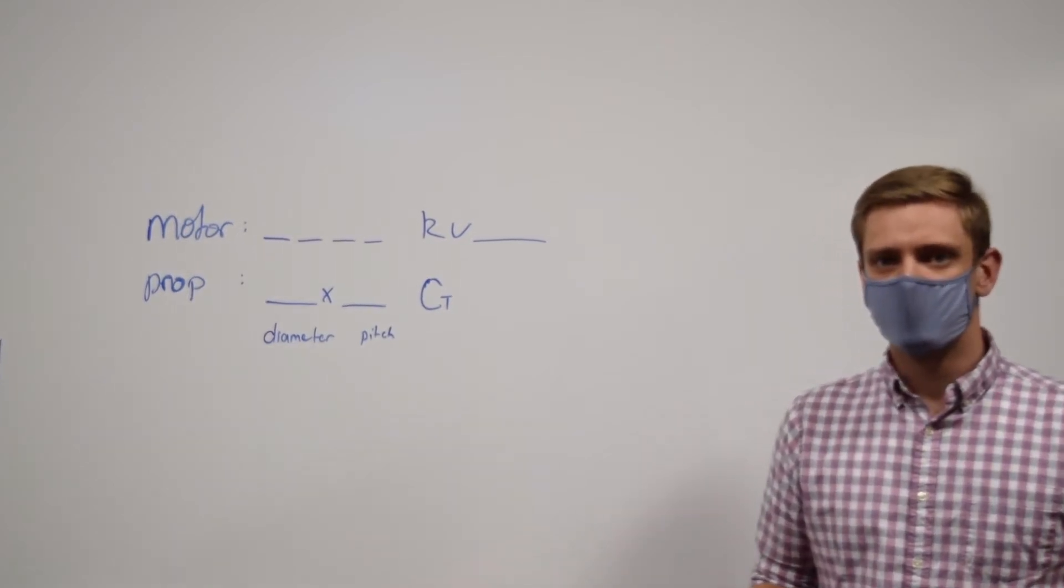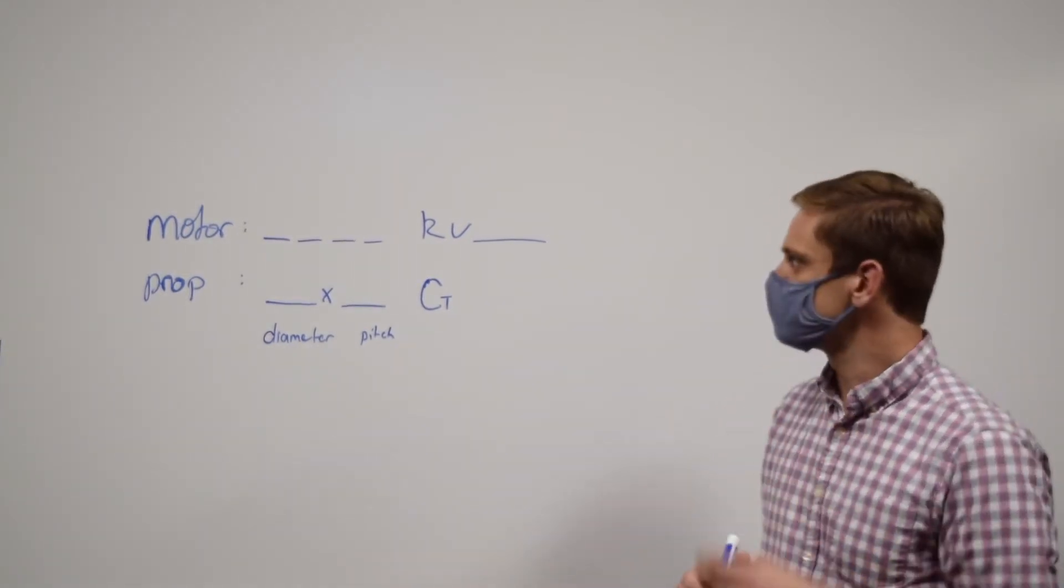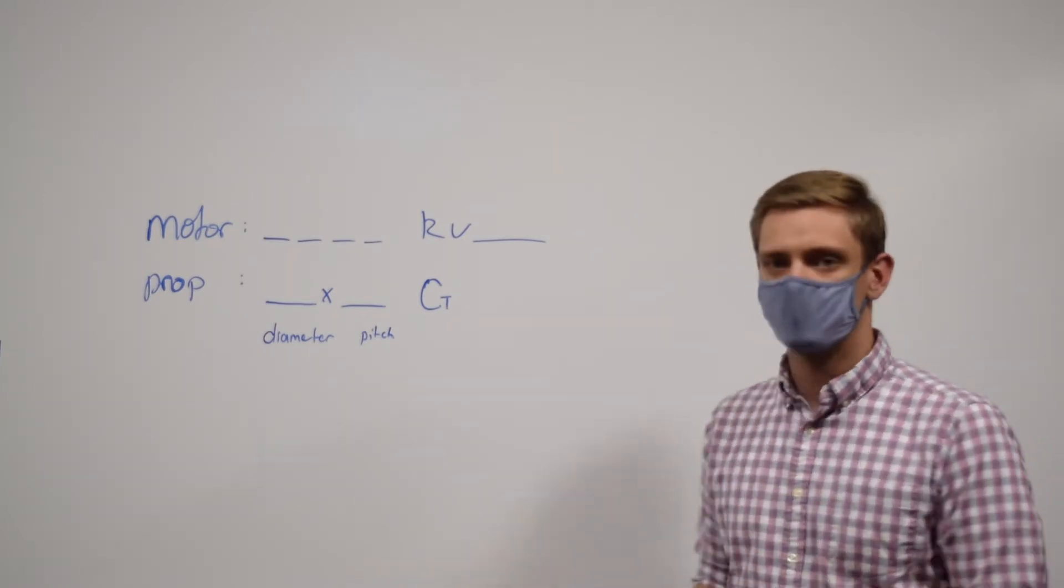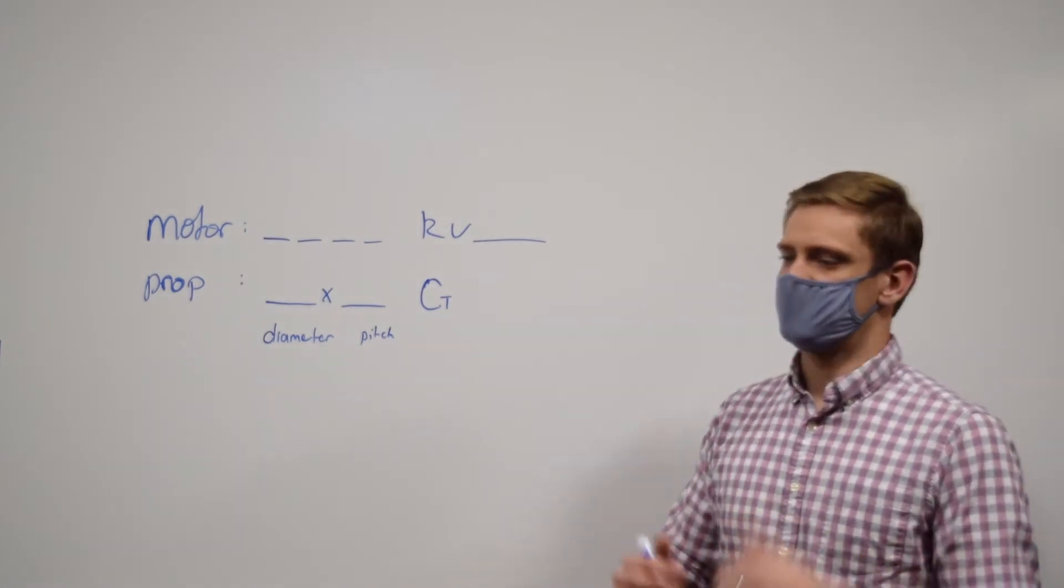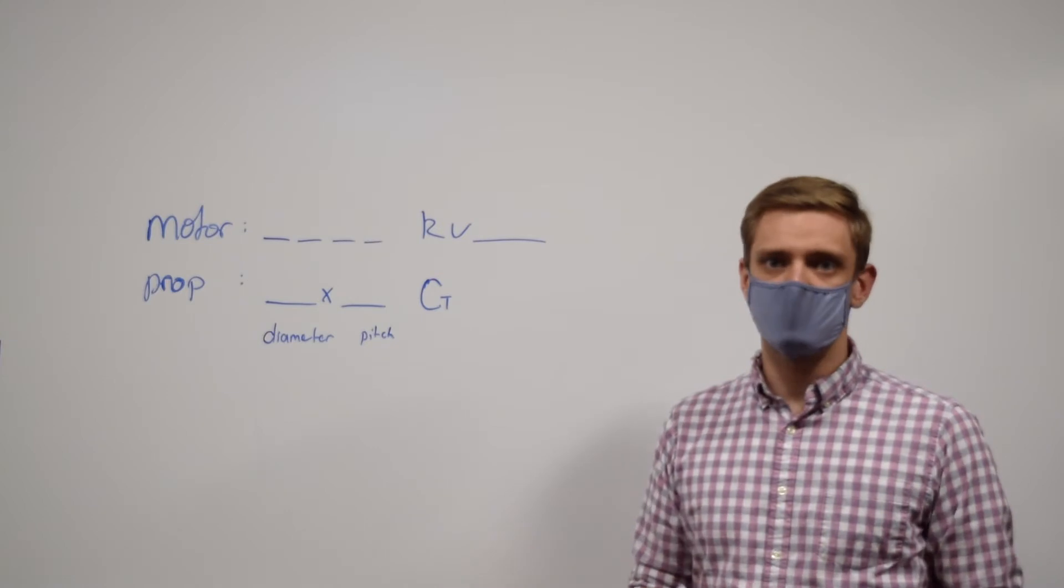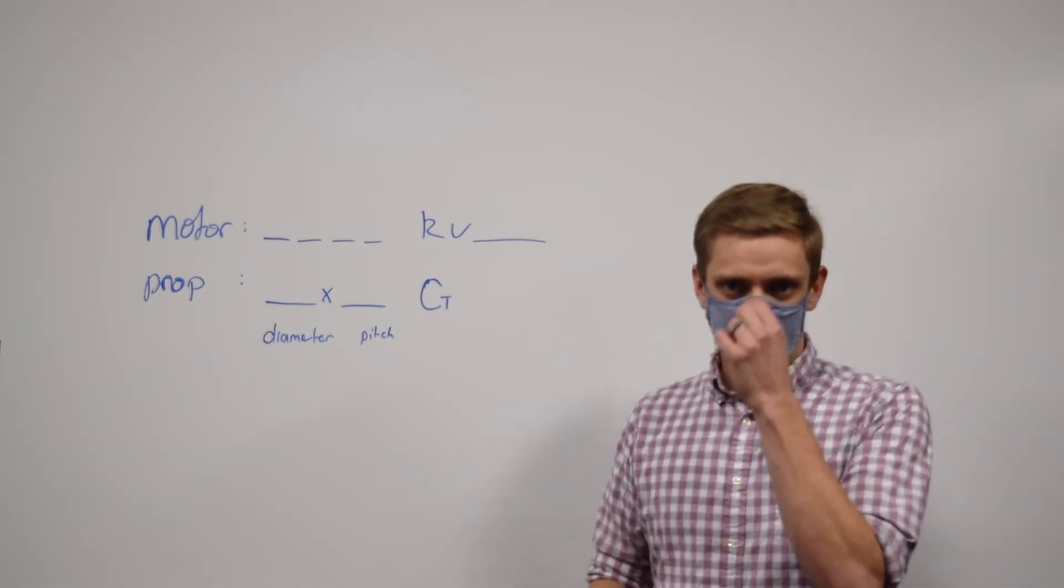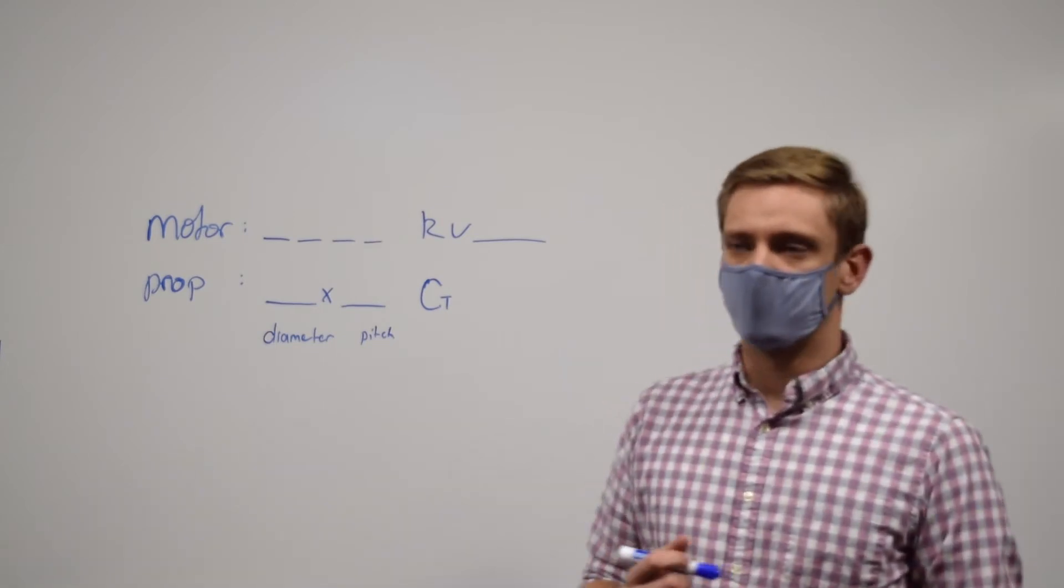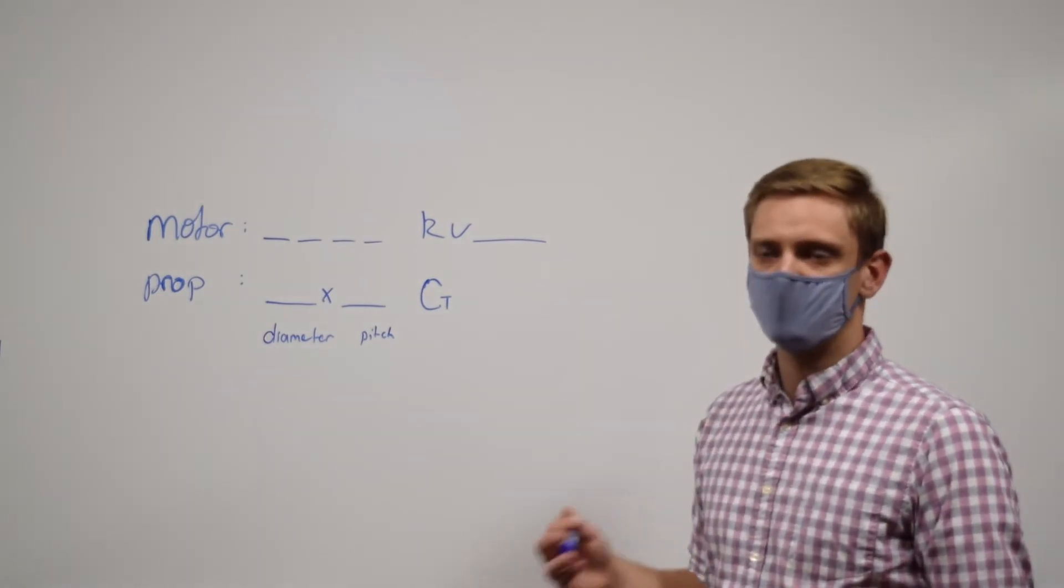Luckily for us, the manufacturers have taken the optimization process and simplified it a little bit for us. If you're looking to produce a certain amount of thrust for your aircraft, typically whenever you're scanning through engines, they'll have ratings to say, okay, at this throttle we pull this much current and we produce this much thrust at this RPM. However, whenever you're optimizing your circuit, there are a couple things that you need to know.